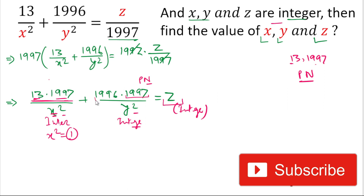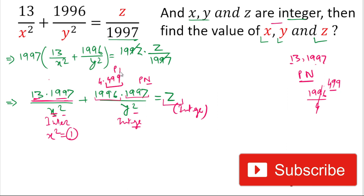Now for 1996: it is divisible by 4. Dividing 1996 by 4 we get 499, so we can write 1996 as 4 multiplied by 499. Here 499 is also a prime number. So the value of y² can be 1 or 4 so that we can get the value of the whole term as an integer.